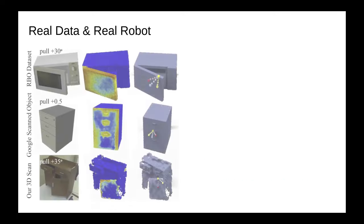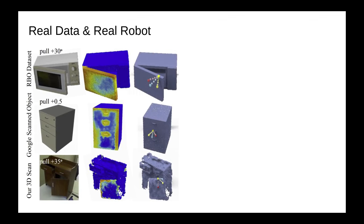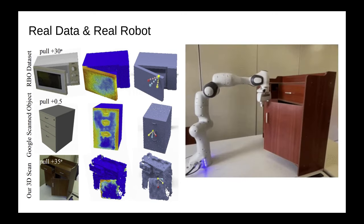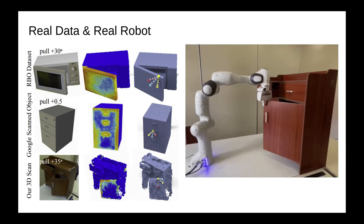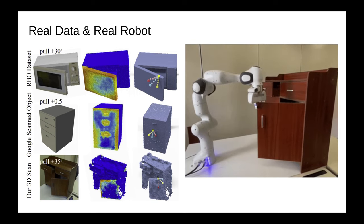We directly test our pre-trained model over real-world data and observe reasonable generalization capability. We further show experiments on a real robot where we execute top-rated trajectory proposals at predicted actionable locations.